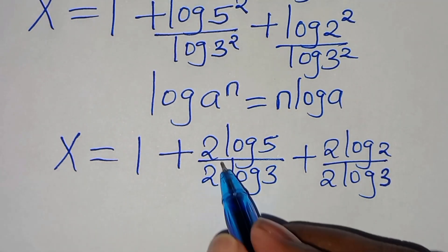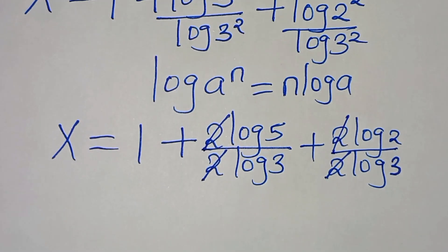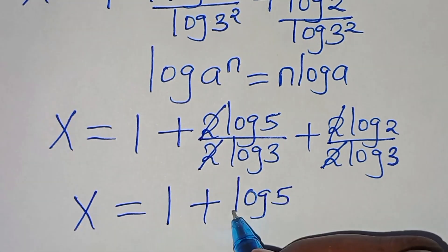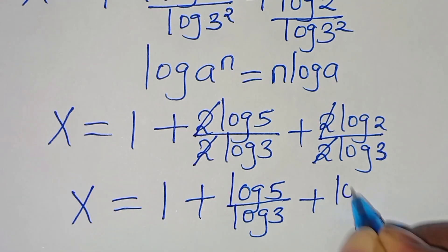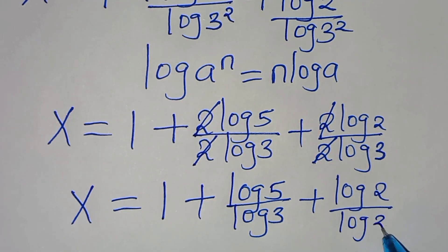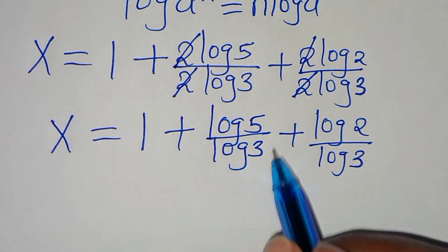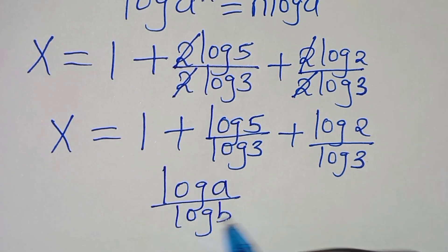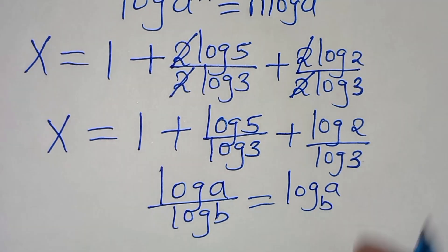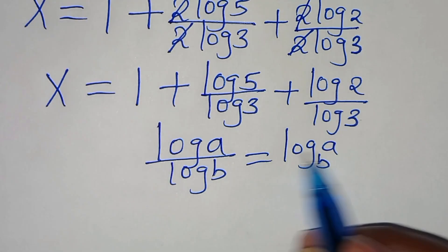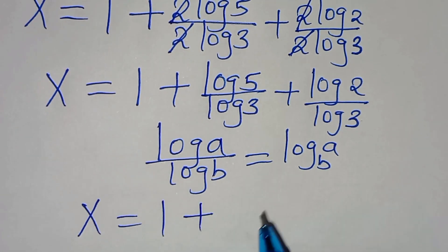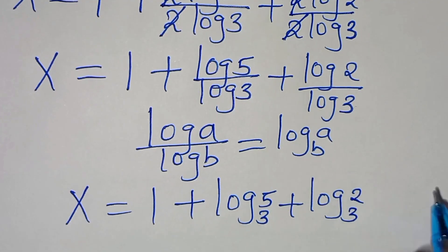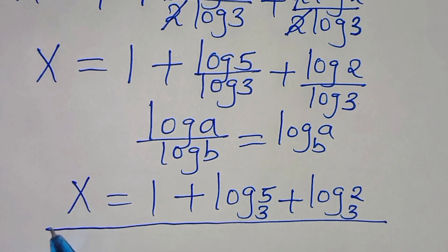From here, the 2's cancel, and we have x equal to 1 plus log 5 divided by log 3, then plus log 2 divided by log 3. Now, log 5 divided by log 3 and log 2 divided by log 3 are in the form of log a divided by log b, which we can express as log base b of a. Applying this change-of-base property, we have x equal to 1 plus log base 3 of 5, plus log base 3 of 2. This is the value of x.